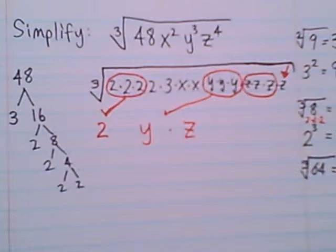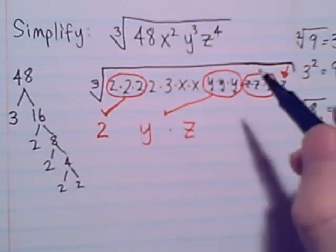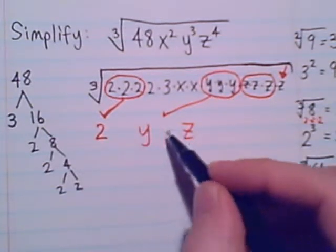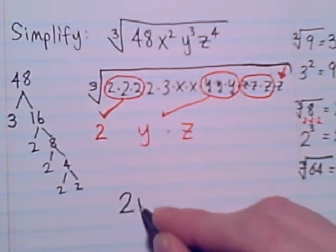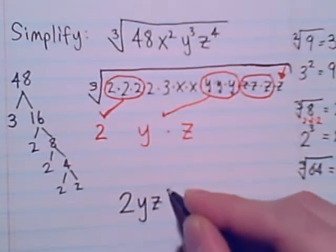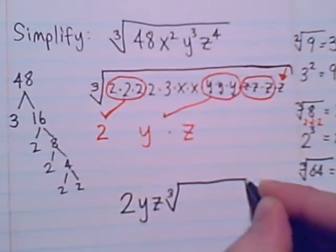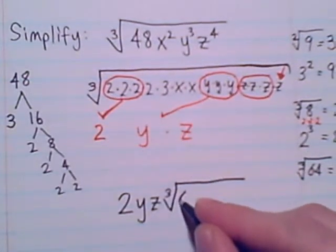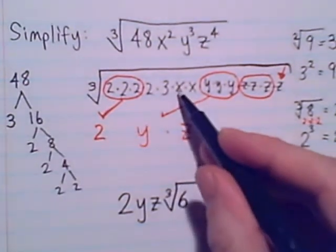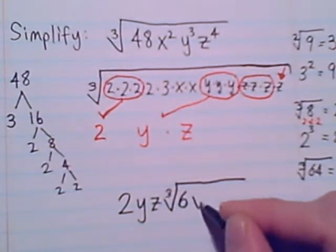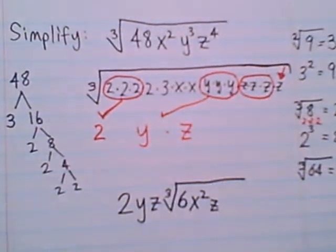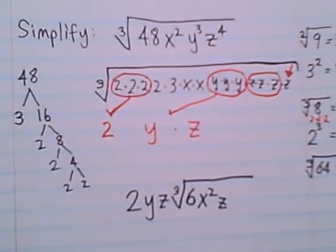The factors that are left inside the cube root will need to be in the cube root for our answer. So I'll start to clean things up here. Out in front we have 2 times y times z. Open up the cube root where we need to have 2 times 3, so our coefficient is 6. We have x times x is x squared.